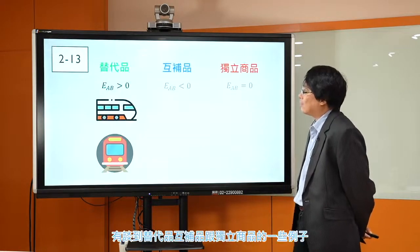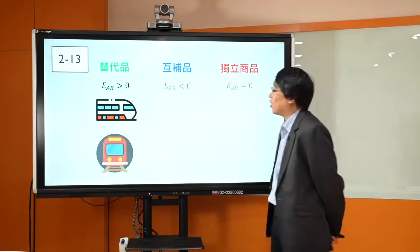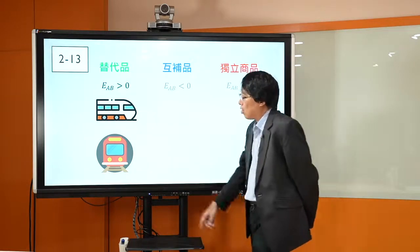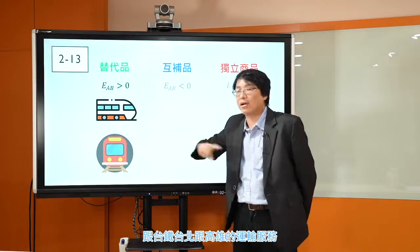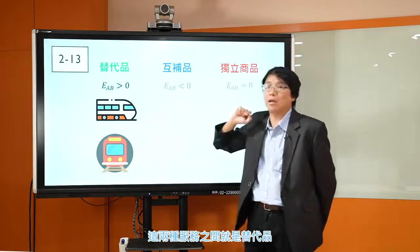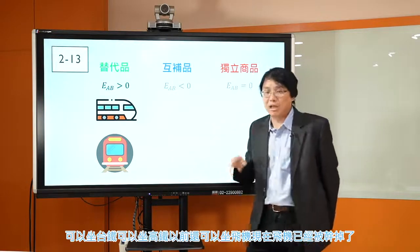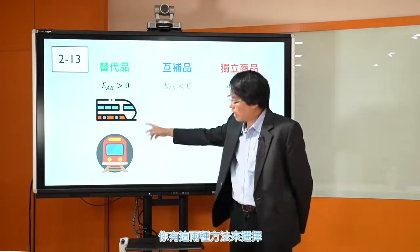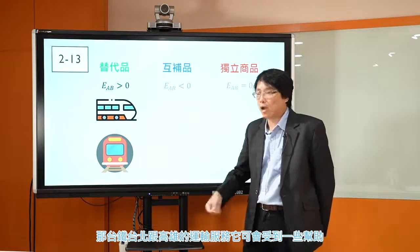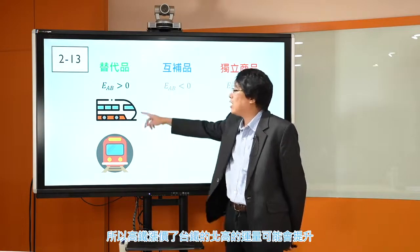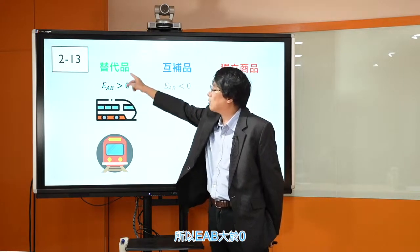我们在前几讲里面有谈到替代品、互补品跟独立商品的一些例子，来带大家再review一次。哪些商品之间可能是替代品？比如像高铁台北跟高雄的运输服务，跟台铁台北跟高雄的运输服务，这两种服务之间就是替代品。你从高雄去台北，可以坐台铁可以坐高铁，以前还可以坐飞机，现在飞机已经被干掉了。如果今天高铁涨价了，台铁北高的运输服务可能会提升，变动方向是同样的，EAB大于0，他们两个是替代品。